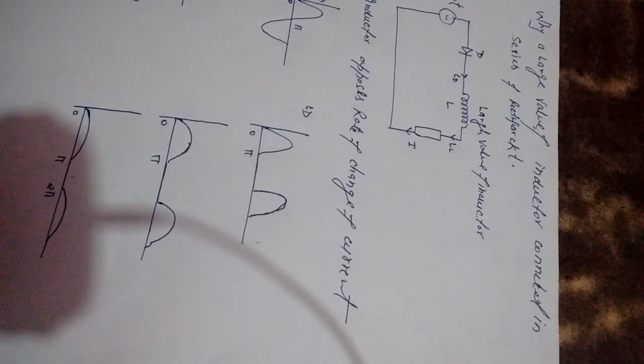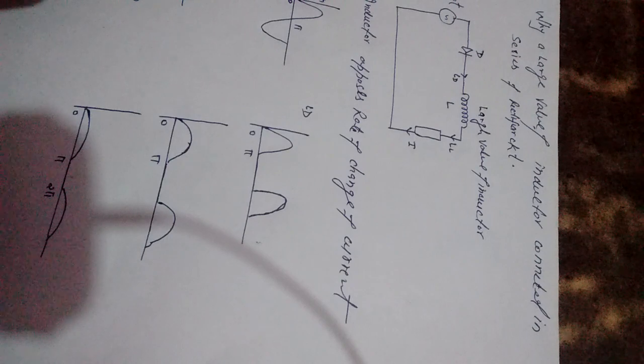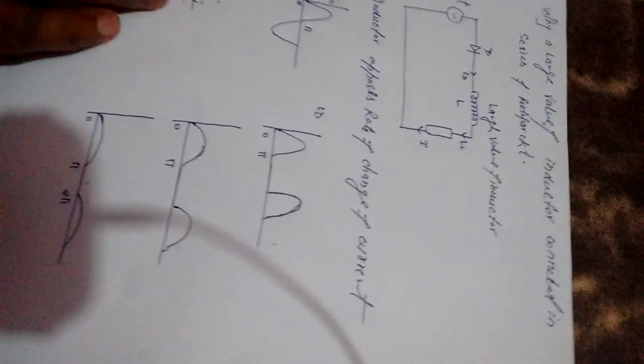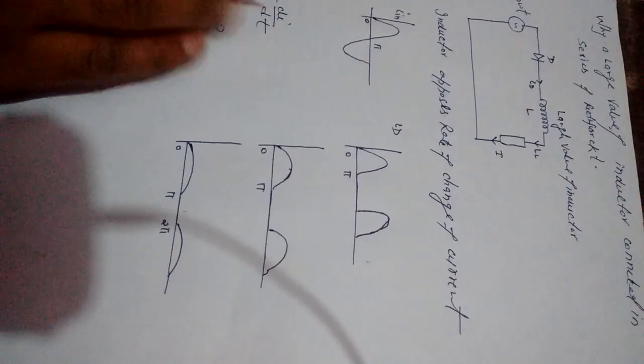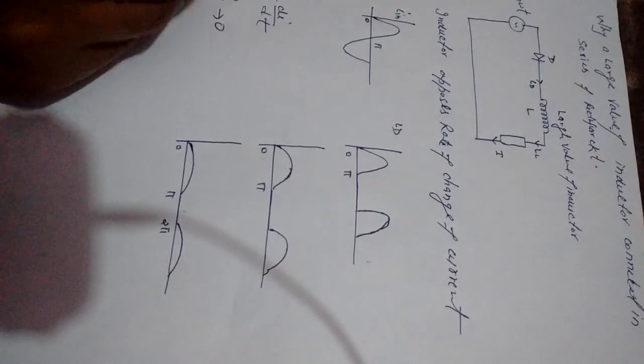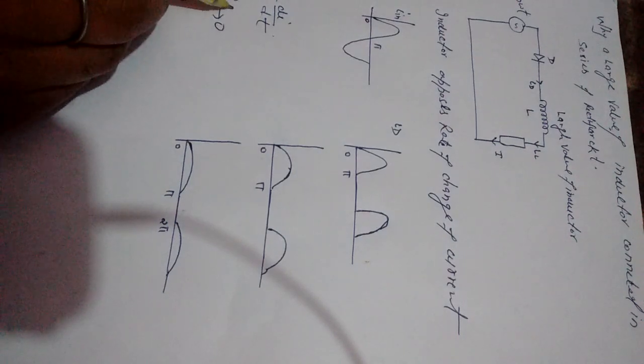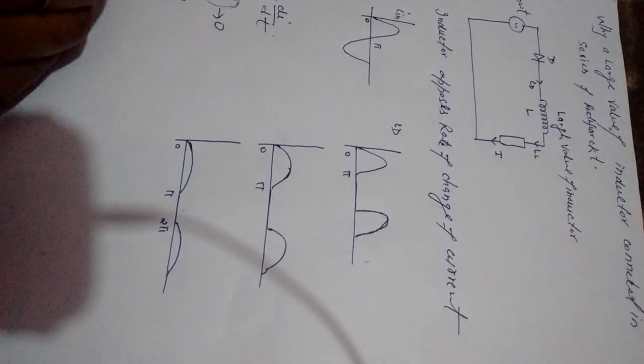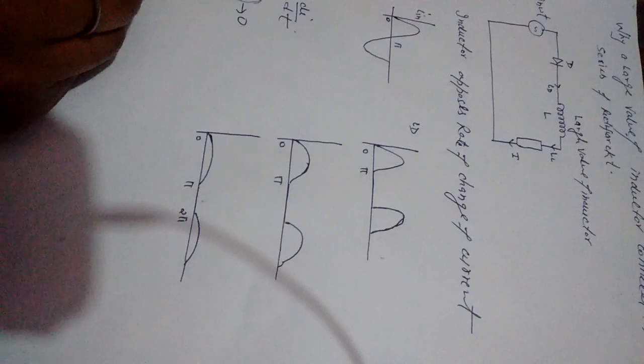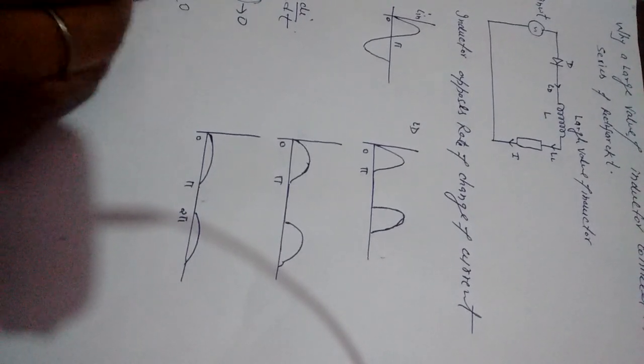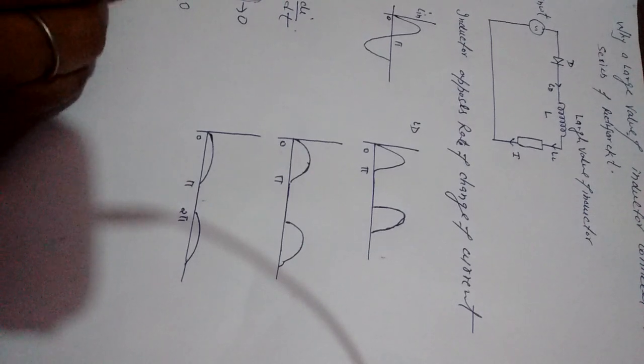Actually, an inductor opposes the rate of change of current, as you all know. It means V will be L di/dt. V is the voltage across the inductor. V will be L di/dt. When di/dt is zero, then V will be zero. But if di/dt is not equal to zero, then V will not be zero.